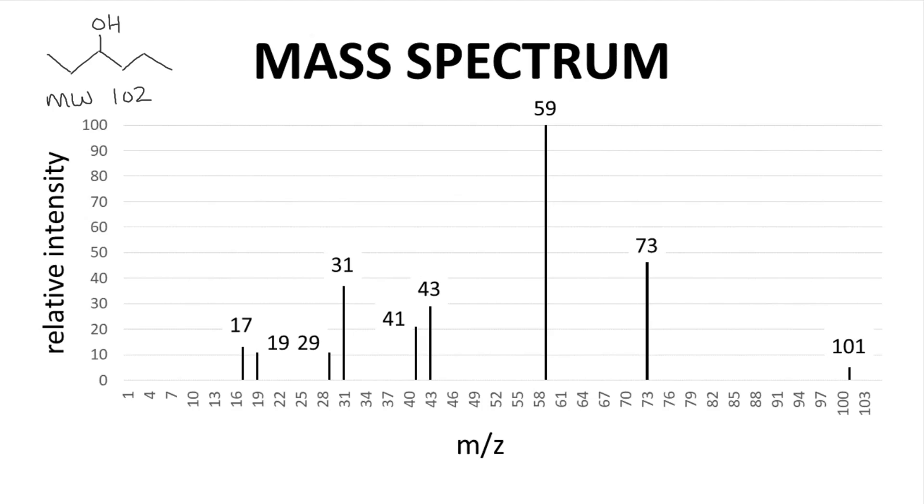We can actually explain the 101 peak pretty easily. Let's draw the likely parent ion with its oxygen radical. We can use a radical site-initiated fragmentation to break the hydrogen off the molecule.